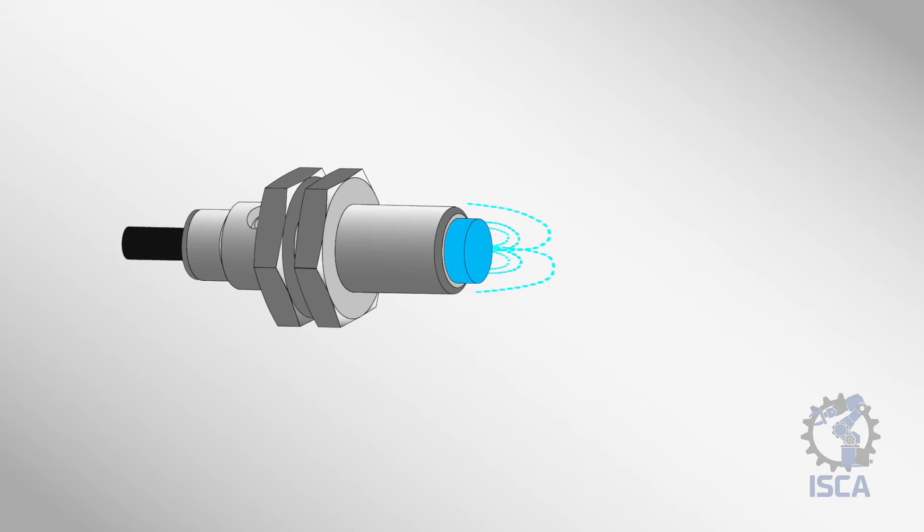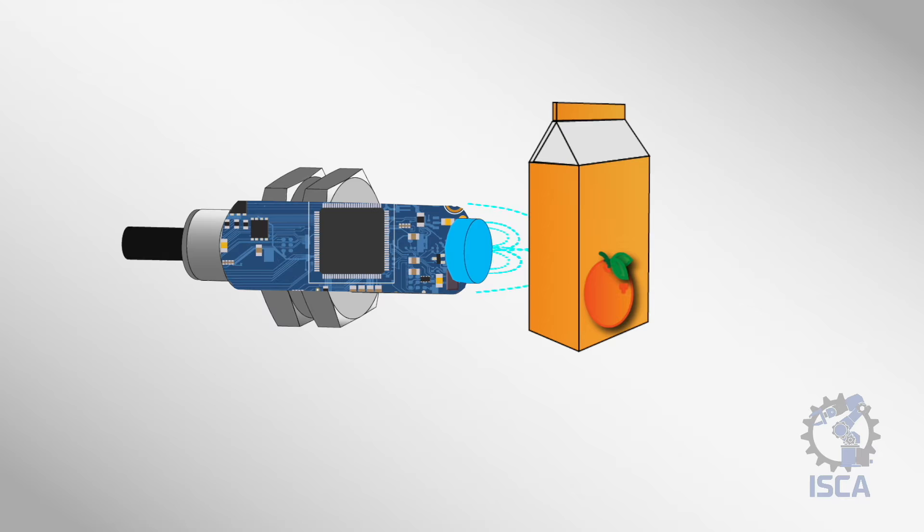Capacitive sensors work by emitting an oscillating electric field from the sensing face. When an object comes near this field, it disrupts it and causes measurable capacitance changes. The sensor electronics measure these tiny changes and detect the presence of the object.